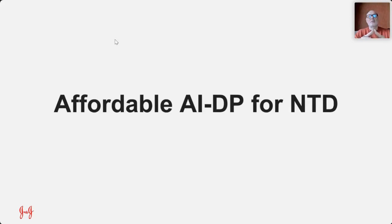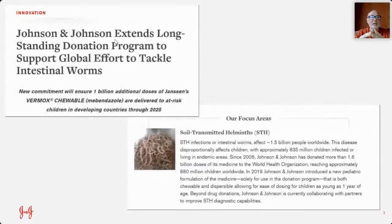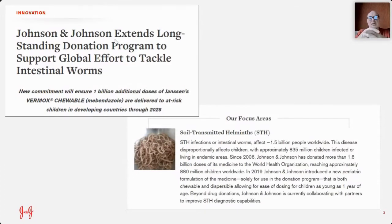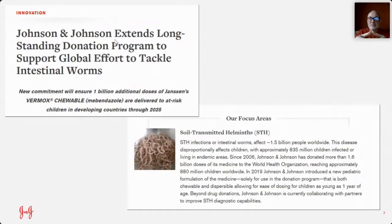For us, the use case is connected to the J&J donation program for VERMOX. The donation program started in 2006, and in 2015–17 there was development of VERMOX chewable — that is mebendazole — which is now approved. There is a commitment from Johnson & Johnson to deliver 200 million doses annually up to 2025.